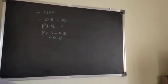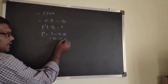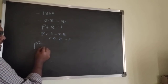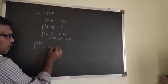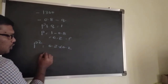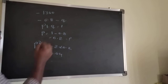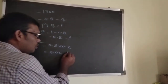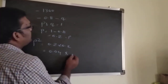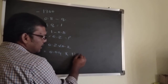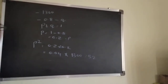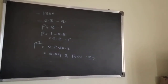They ask for the number of grey colour (dominant homozygous) organisms. We calculate p² = 0.2 × 0.2 = 0.04. Multiply by total individuals: 0.04 × 1300 = 52. So the number of homozygous dominant individuals is 52.